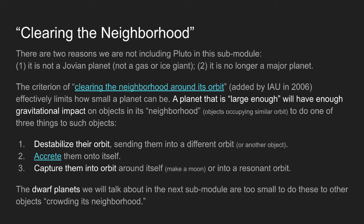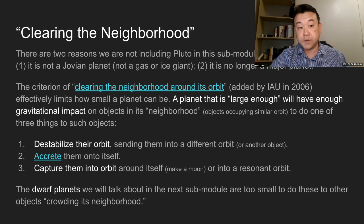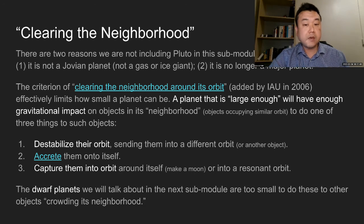The criterion that they came up with, which would separate Pluto from the major planets without demoting any of the other major planets, was that for something to be classified as a major planet, it must have cleared its neighborhood or cleared the neighborhood around its orbit.